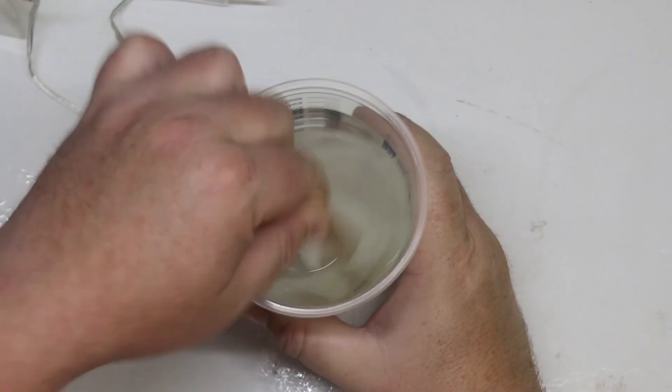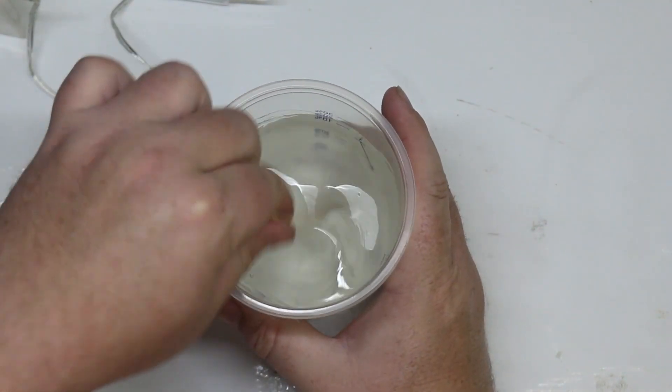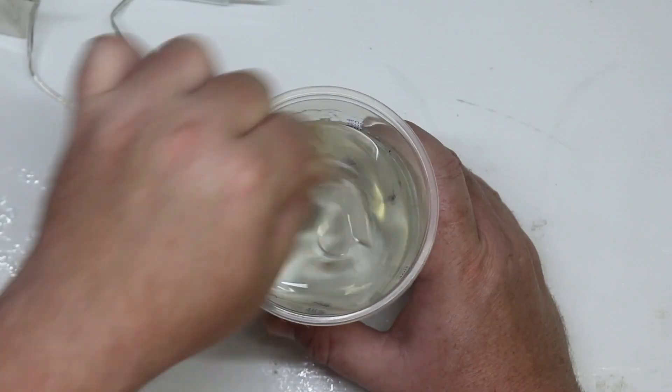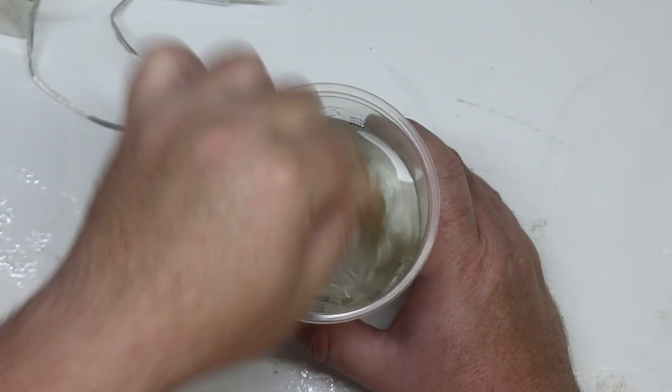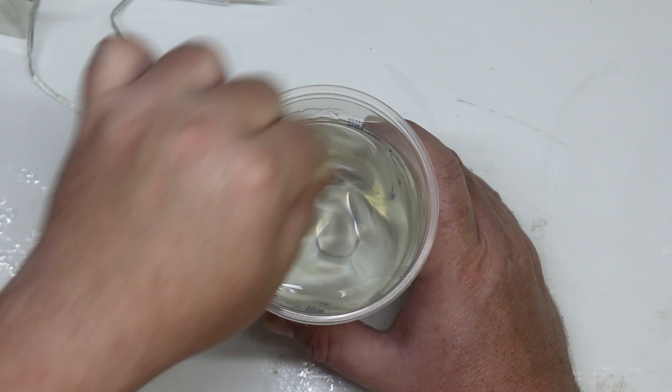Make sure when you mix your resin you do it really thoroughly. Make sure you scrape down all your sides and your bottom, that way you won't have any soft spots. I like to mix for about two minutes, but you'll also notice that when you start mixing it starts off cloudy and then it becomes crystal clear. That's often a good indication that you've mixed long enough.